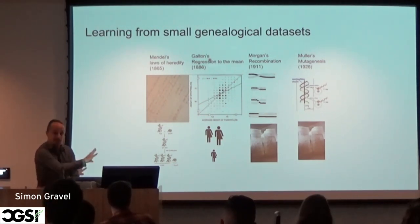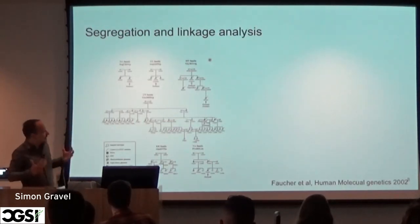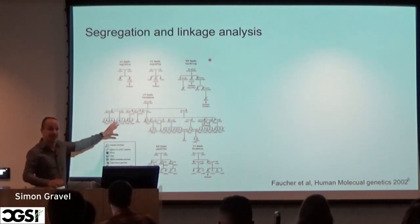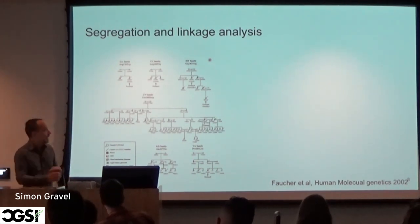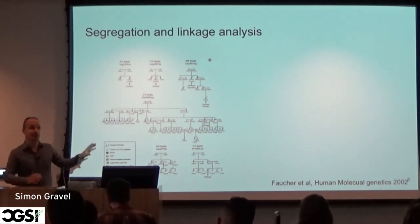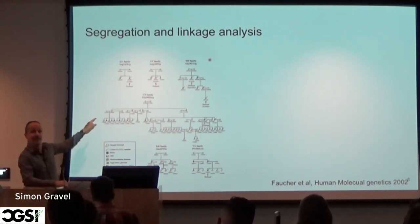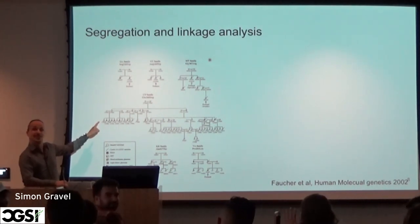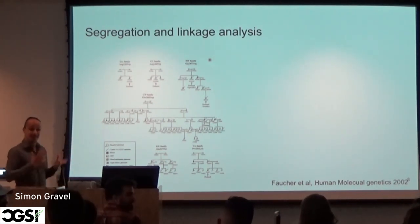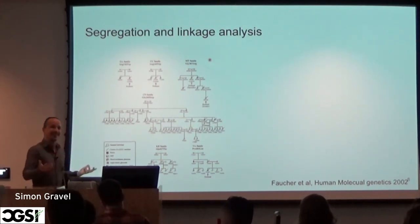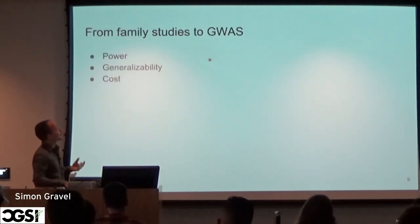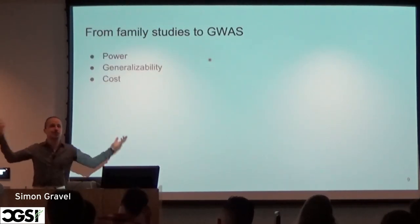These were small families, typically like one generation. Now if you started doing genetics a little bit later, in the 70s for example, you'd have come across family structures where you have a bunch of affected individuals in a reasonably large family. A very small minority of people today have analyzed a pedigree like that in their research, whereas before that was the bread and butter of geneticists. The field has moved to large cohorts and GWAS.